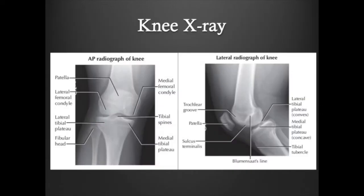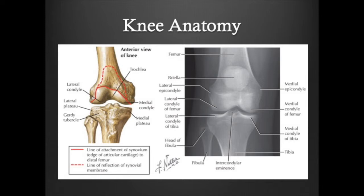A knee x-ray is used to visualize the bones of the knee. This is the most accurate method of characterizing arthritis. There are multiple anatomic structures seen on both the AP as well as the lateral view. These images will be reviewed with you in my office. Each line and bone on an x-ray corresponds with the anatomy of the bone. Any abnormalities can be seen on x-ray and will be discussed during your patient visit.